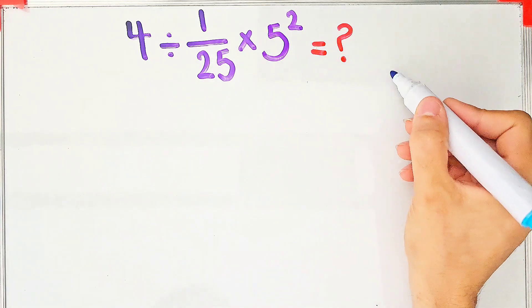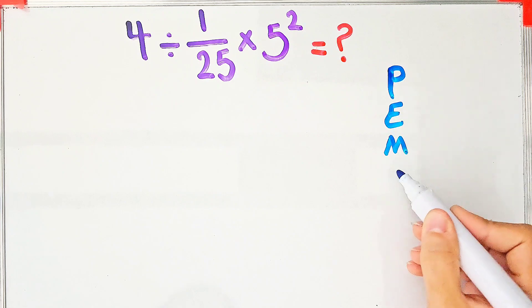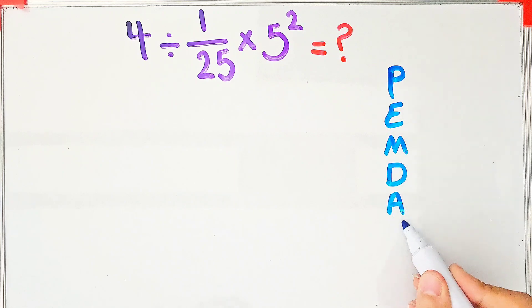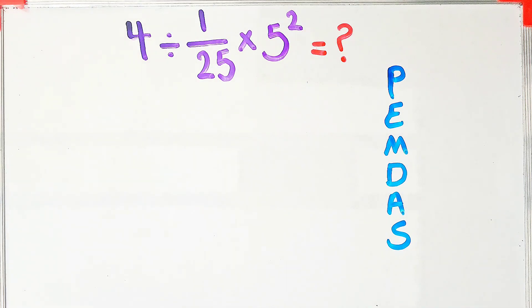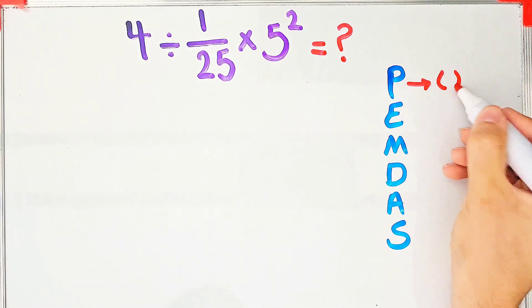To solve this question, we need to follow a rule which is PEMDAS. PEMDAS shows the priority of mathematical operations. If you don't pay attention to this rule, you get the wrong answer. In this rule, P stands for Parentheses, E stands for Exponent, M stands for Multiplication, D stands for Division, A stands for Addition, and S stands for Subtraction.